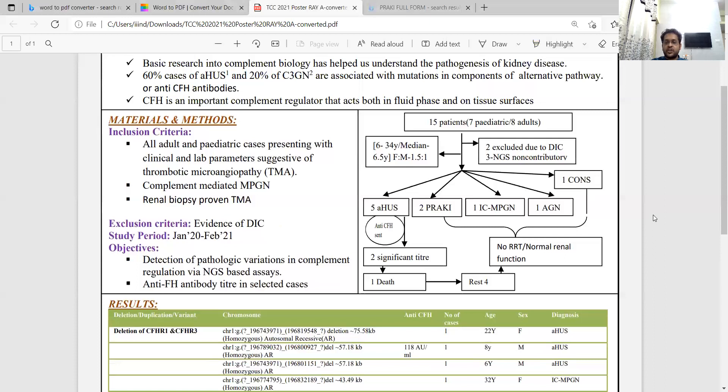Among the positive cases, five were suffering from atypical HUS. Among them, two had significant anti-CFH titers and one of them died eventually.